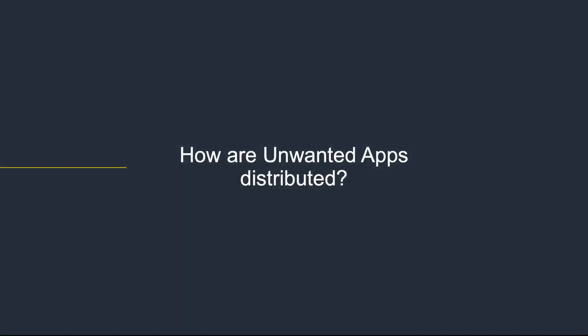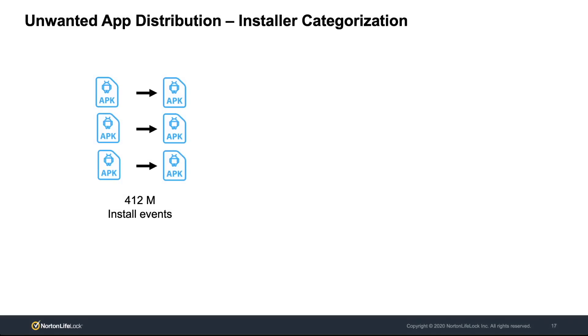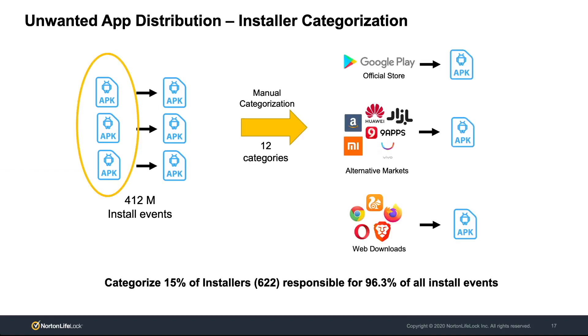Let's move on and answer the main question of our study: how are unwanted apps distributed on Android? We use the who-installs-who relationships and perform a manual categorization of the installer apps into 12 categories, each corresponding to a different vector, and assess how risky each vector can be. Our manual categorization covers only 15% of the installers, but this corresponds to over 96% of the installation events. This plot shows the percentage of installations coming from each distribution vector, including both benign and unwanted app installations.